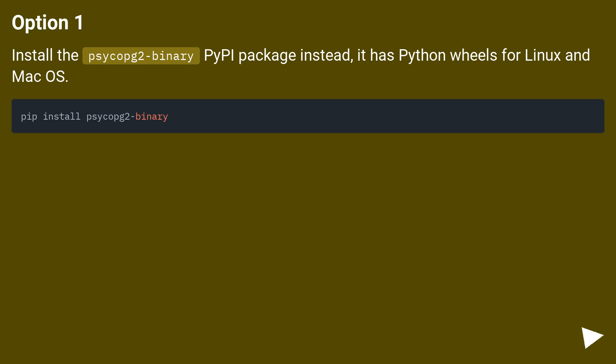Option 1: Install the psycopg2-binary pip package instead — it has Python wheels for Linux and Mac OS.